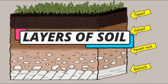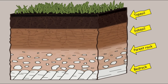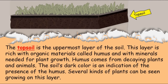The soil is made up of different layers and each layer has its own characteristics. The topsoil is the uppermost layer of the soil. This layer is rich with organic materials called humus and with minerals needed for plant growth. Humus comes from decaying plants and animals. The soil's dark color is an indication of the presence of humus. Several kinds of plants can be seen growing on this layer.